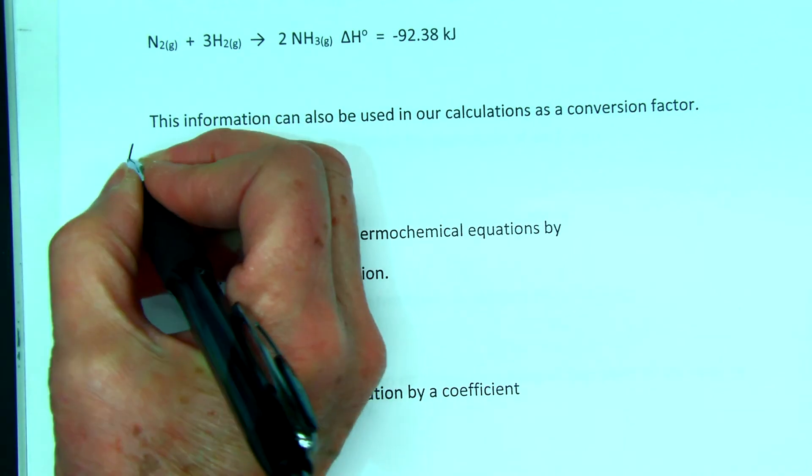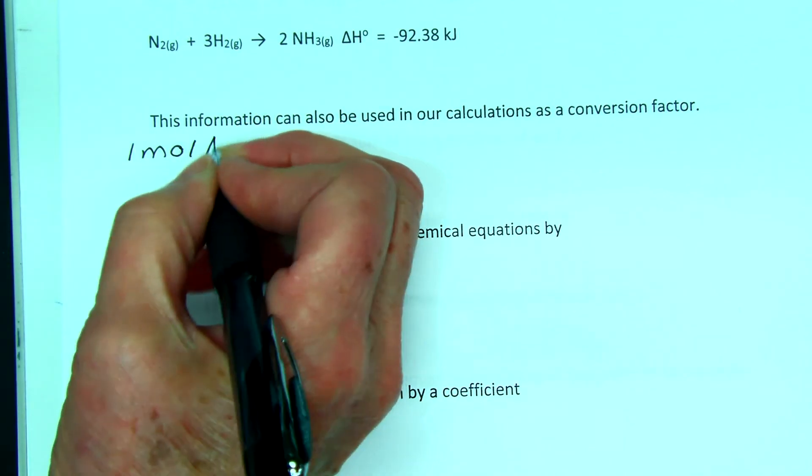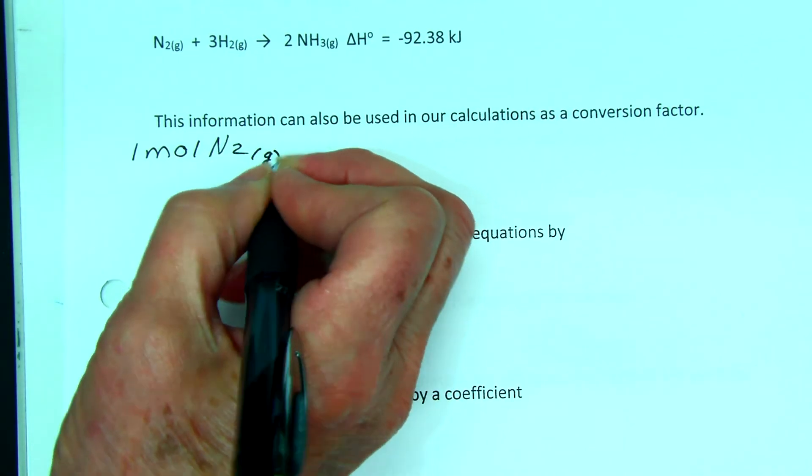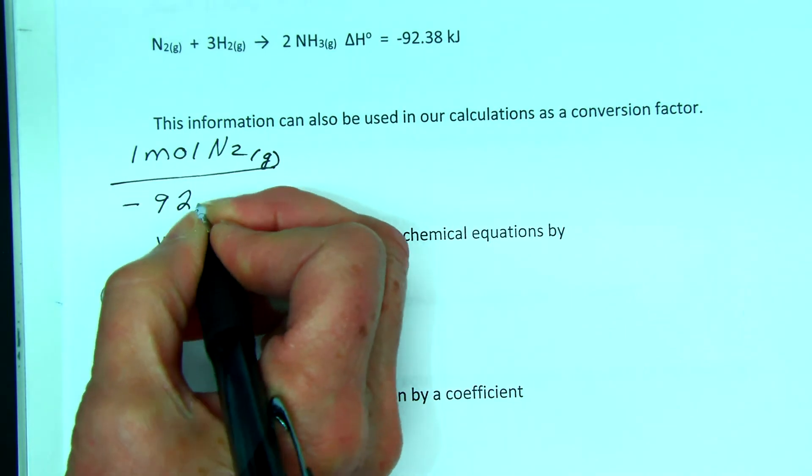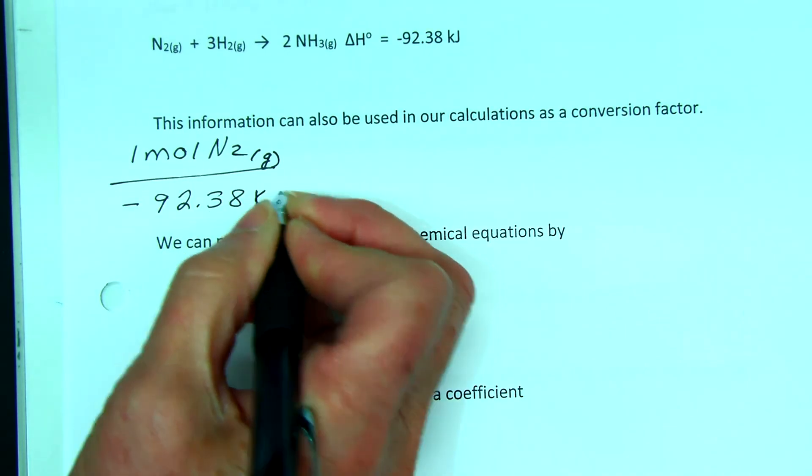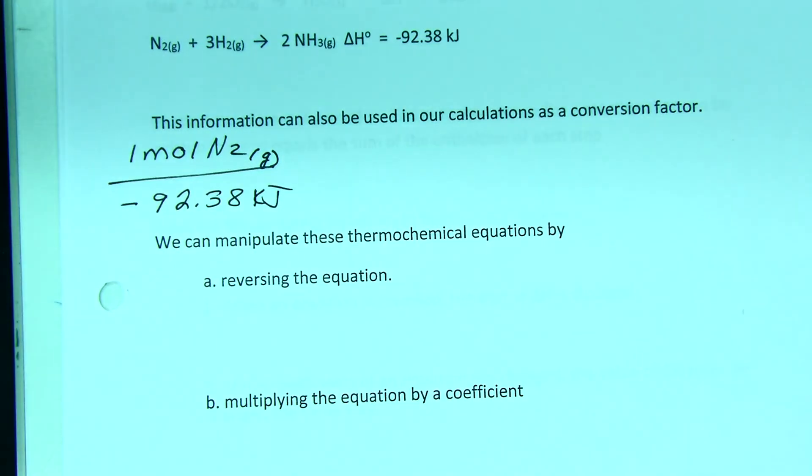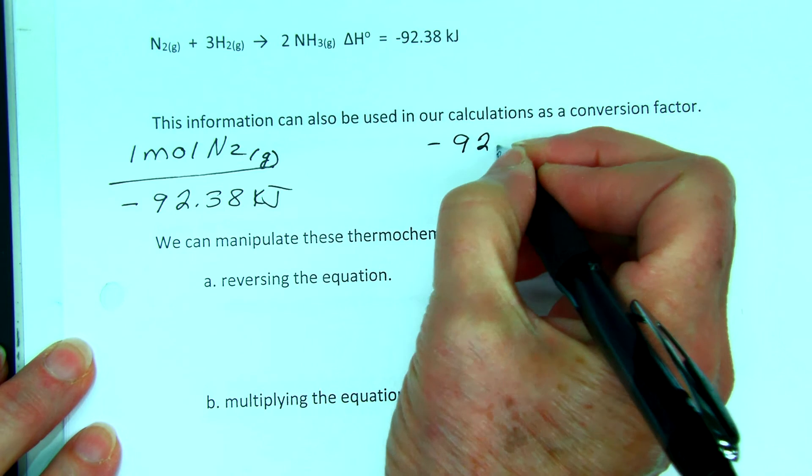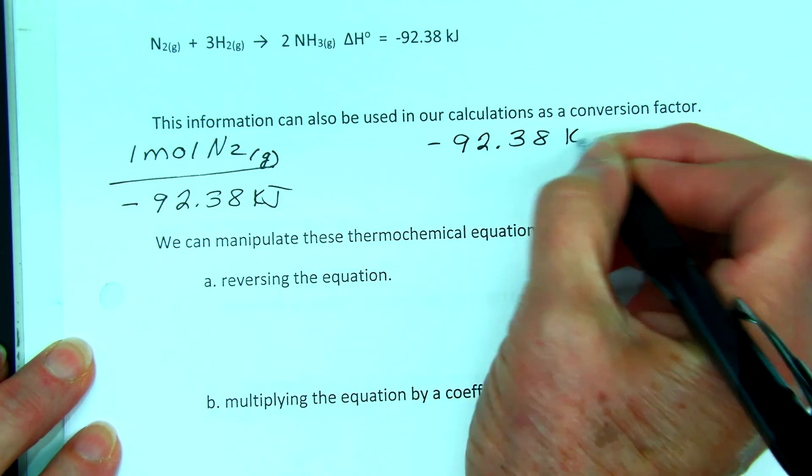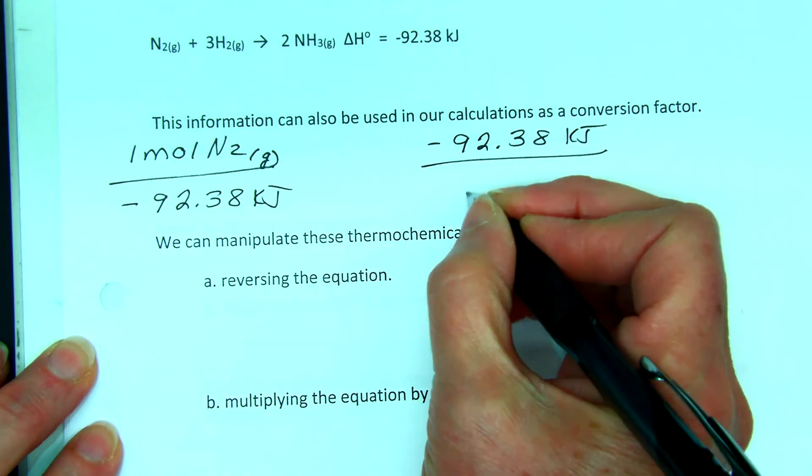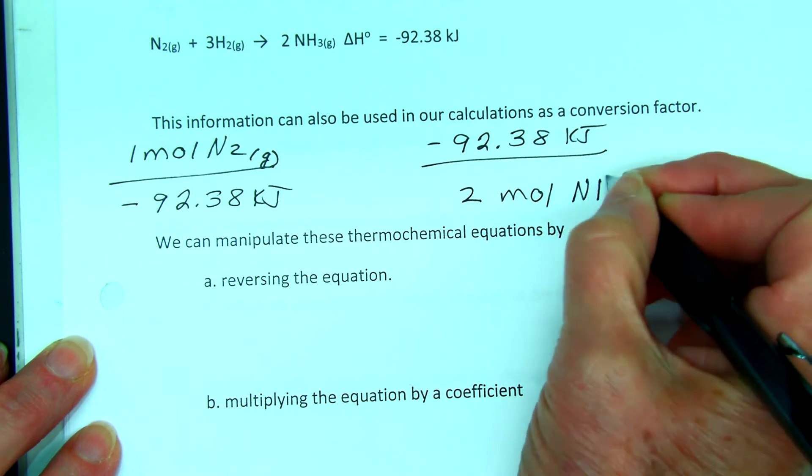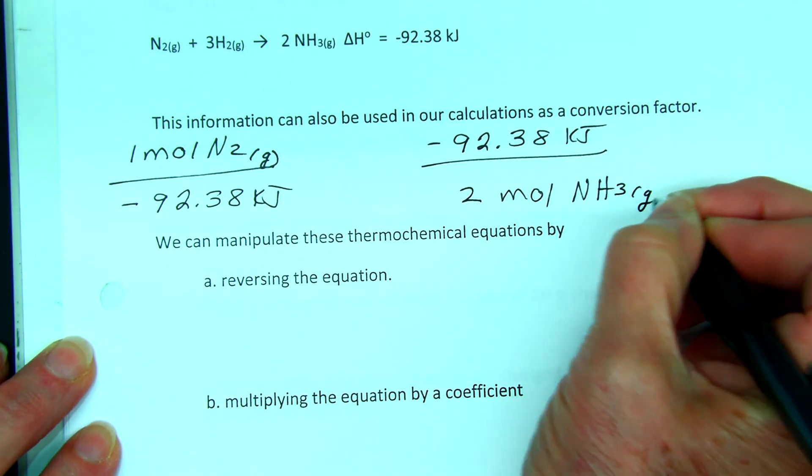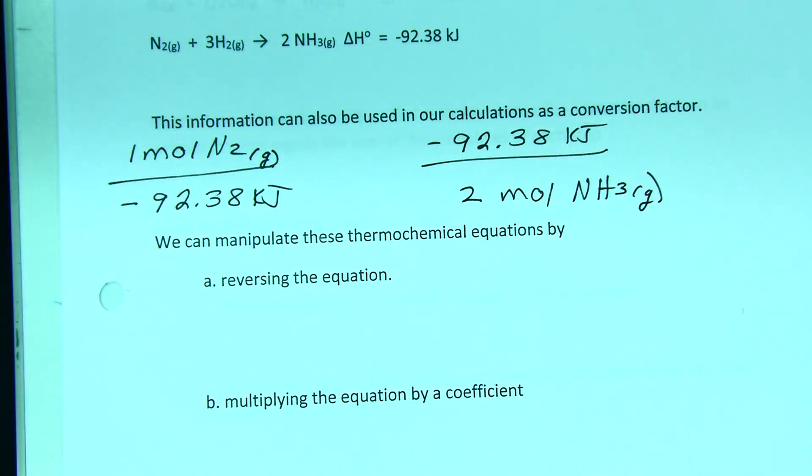Now we can look at this and say, well, one mole of nitrogen gas gives me negative 92.38 kilojoules. So we can use this information about the heat or the enthalpy change as a conversion factor as well. Or I could say negative 92.38 kilojoules is released for two moles of ammonia gas. So that's one thing we can do with this information from thermochemical equations.